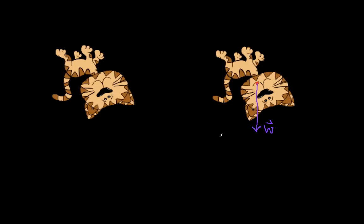Here again we have a free body diagram — somewhat less interesting than the other one. It just shows that the cat has a force downward exerted by gravity, which means in the absence of anything else, the cat is accelerating downward. To end on a happy note, cats actually have a reflex that allows them to right themselves while falling. By the time they hit the ground, unless they start too close or with too much downward velocity, they can turn themselves upright so they land on their feet rather than upside down.